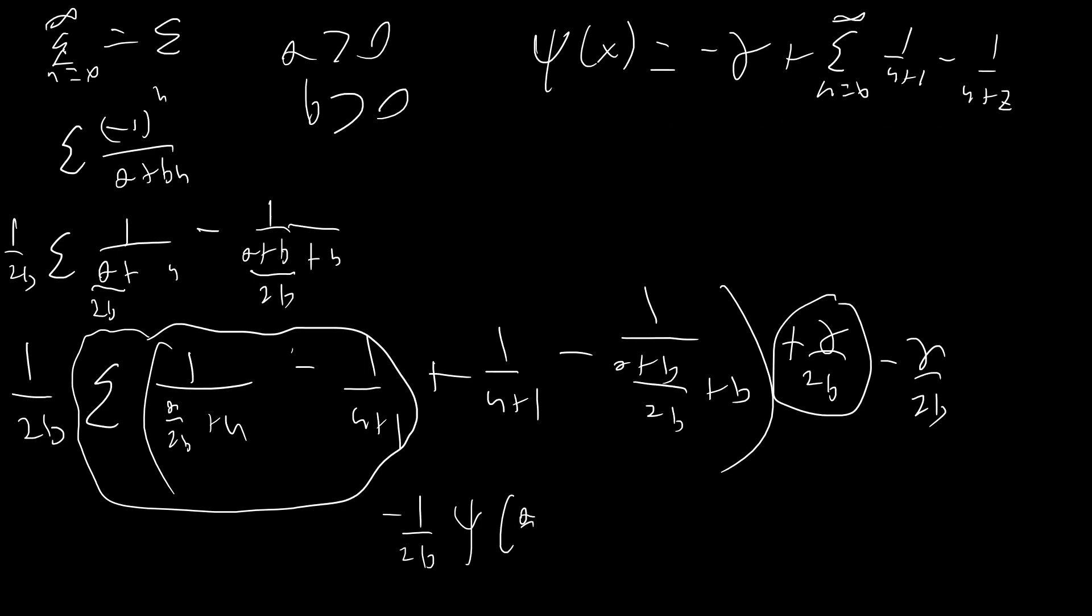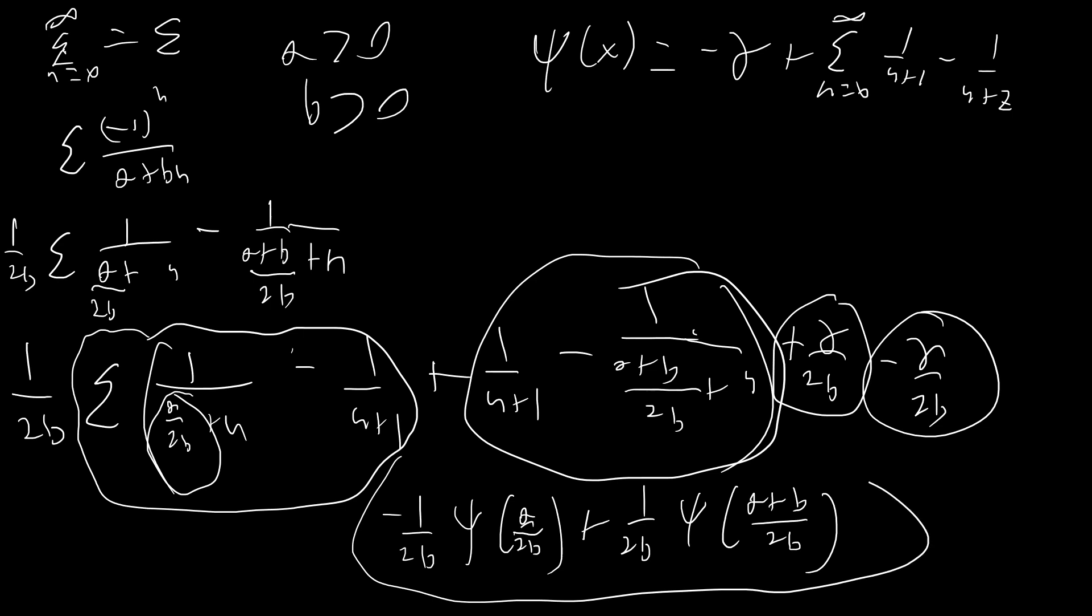Because that's what this is right here. And this part, oh I'm sorry, this right here where I have plus, this should be plus n, not plus b. And so this part combined with this part is just going to be plus 1 over 2b digamma of a plus b over 2b. And that's our answer. So the sum is equal to this. So that's a pretty cool solution.